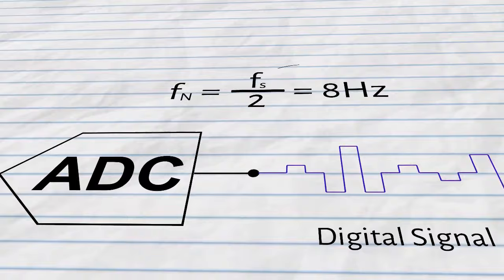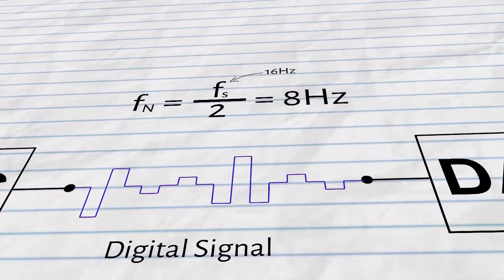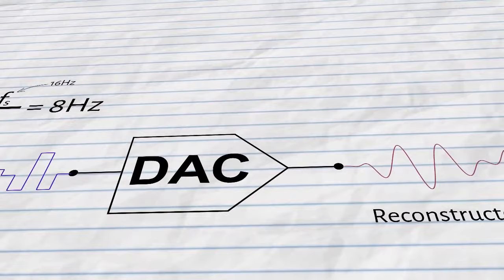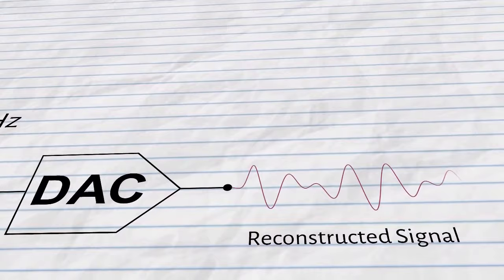When reconstructing the signal from the samples like a digital to analog converter does, any frequencies in the signal that exceed the Nyquist rate will get reflected back into the lower half of the signal's frequency spectrum, in a phenomenon known as aliasing, distorting the signal.